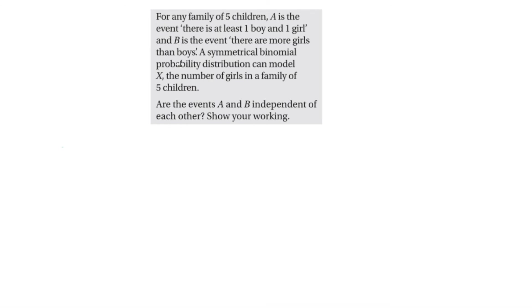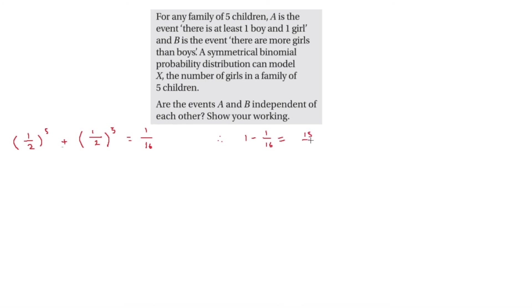We need the individual probabilities for A and B using the binomial distribution. For event A — at least one boy and one girl — it is easier to find 1 minus the probability of all boys or all girls. That is (1/2)^5 plus (1/2)^5, which equals 1/16. So P(A) = 1 minus 1/16 = 15/16.